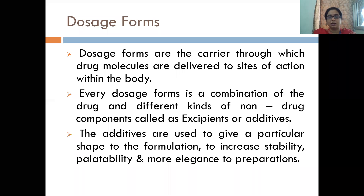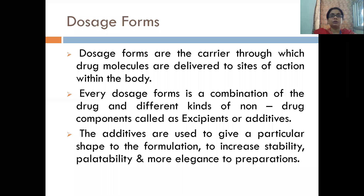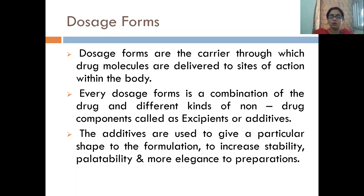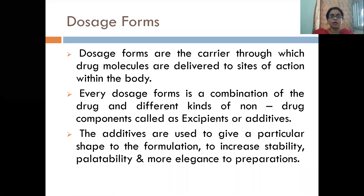Normally we predict the expiry period for 2–3 years, and it should be stable at all temperatures and humidity. If it doesn't taste good, we try to make it palatable. We also consider elegance — for children especially. For example, if we say it is an orange flavor, it should be orange in color. If it is lemon flavor, it should be slightly yellow. If it is strawberry, then it should be red to pinkish color. So taste and color — we keep both in mind.